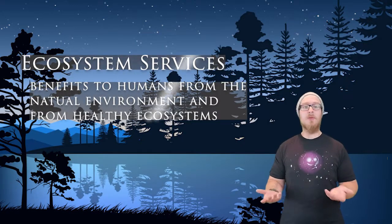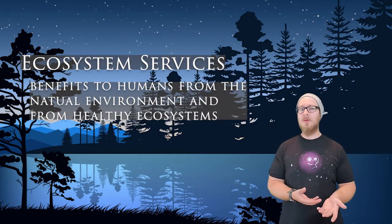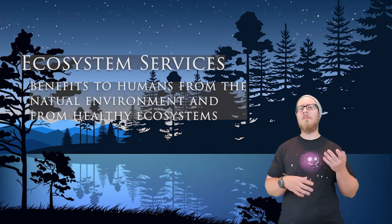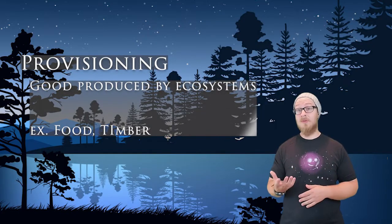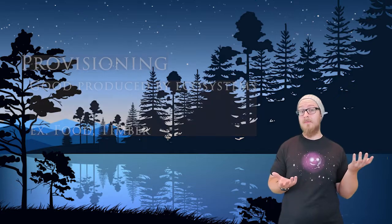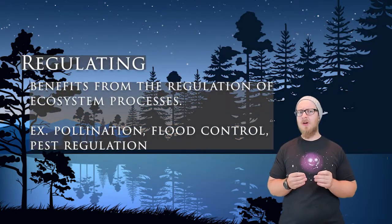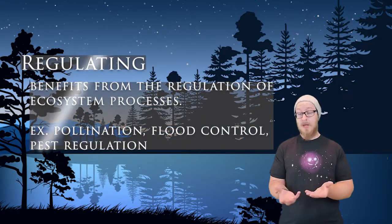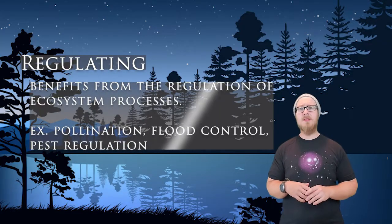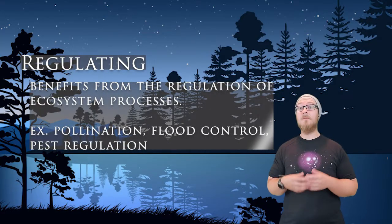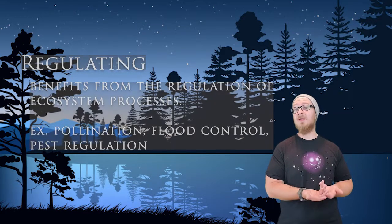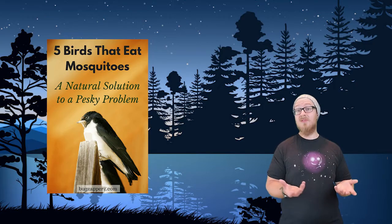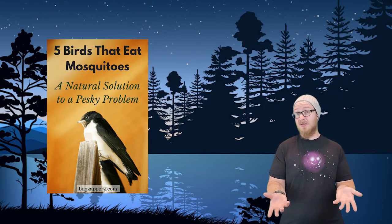Ecosystem services are the benefits to humans from the natural environment and from healthy ecosystems, broken down into four main categories. Provisioning services are goods produced by ecosystems like food and timber. Regulating services are benefits from the regulation of ecosystem processes — these include pollination, flood water absorption which mitigates flood damage, and pest regulation, where some animals eat the things that annoy us.